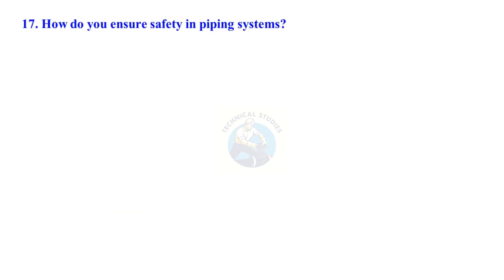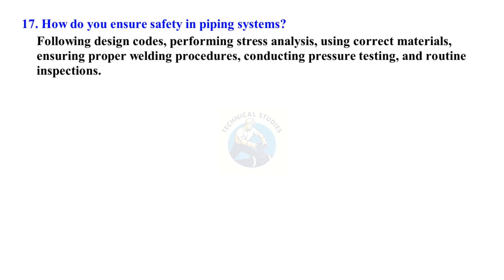How do you ensure safety in piping systems? By following design codes, performing stress analysis, using correct materials, ensuring proper welding procedures, conducting pressure testing, and performing routine inspections.